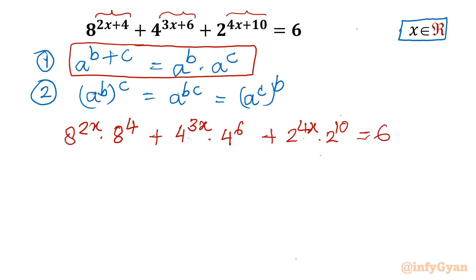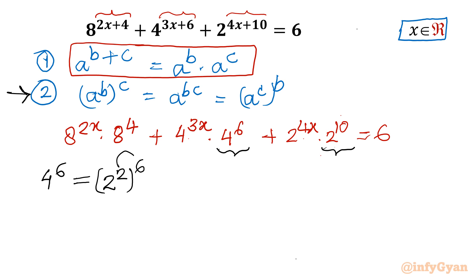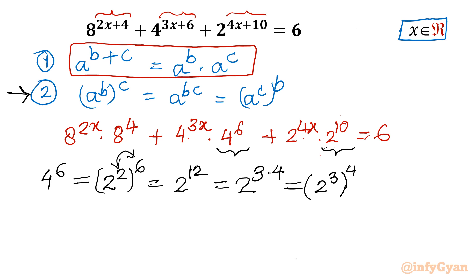Now I will consider the constant exponents separately. We have 4^6 and 2^10. We can write 4^6 as (2^2)^6, and using Property 2, this equals 2^12. Now 12 = 3 × 4, so 2^12 = (2^3)^4 = 8^4. That means instead of writing 4^6 we can consider this term as 8^4.